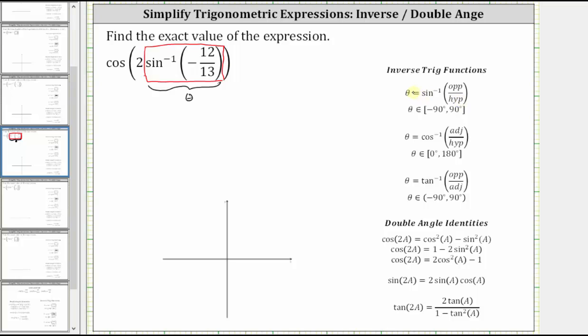is the sine function value, and the output, the angle theta, is in the closed interval from negative 90 degrees to positive 90 degrees. So again, this expression is telling us that sine theta is equal to negative 12 thirteenths.